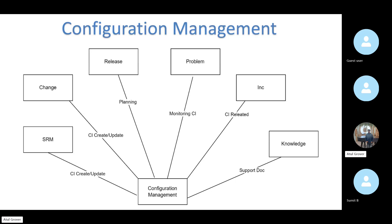Where we store all information about CIs is called the Configuration Management Database. This picture shows how a configuration item is connected — how CI connects to SRM, change, and release management. We use CMDB to make better planning of our system and to monitor problems on a particular CI — for example, if a server always has issues, we monitor it for five, seven, or ten more days.